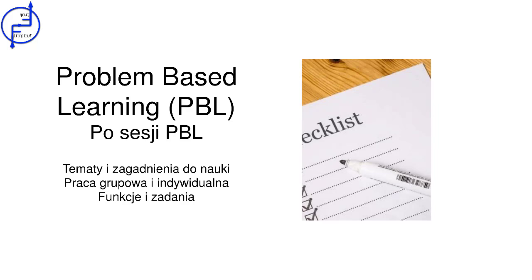Po zakończeniu sesji roboczej studenci powinni ustalić plan nauki na następną sesję. Należy ustalić, jakie tematy należy studiować, jakie cele powinno obejmować i jakie zadania będą wykonywane. Muszą także ustalić, które tematy będą badane indywidualnie, a nad którymi trzeba pracować w grupach. Ponadto należy wskazać funkcje i zadania do wykonania oraz określić, jakiego rodzaju wsparcia potrzebują od nauczyciela jako eksperta.